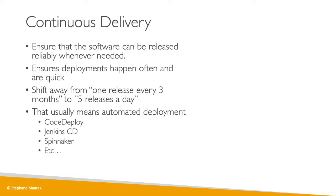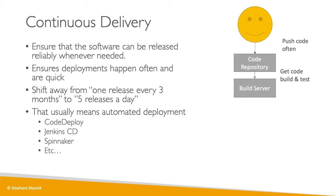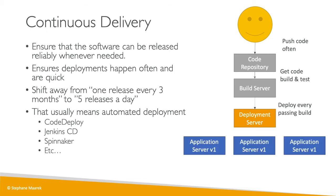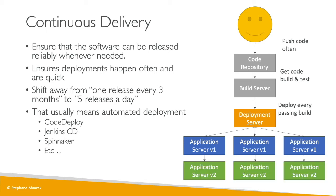What does a continuous delivery pipeline look like? The developer pushes code often, then the build server gets the code, builds it, and tests it. After the build server is done, the deployment server gets the build output and deploys the new version to the application server — going from v1 to v2 at a high level. This is the idea behind continuous delivery.